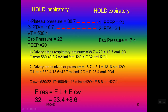Now let's calculate. Respiratory compliance equals tidal volume over plateau pressure minus PEEP. This gives the compliance value, and 1000 divided by this gives the elastance. Lung compliance equals tidal volume over trans-alveolar pressure during inspiration minus trans-alveolar pressure during expiration. Chest wall compliance equals tidal volume over esophageal pressure during inspiration minus esophageal pressure during expiration. Total elastance = 32, lung elastance = 23, confirming the results are correct.